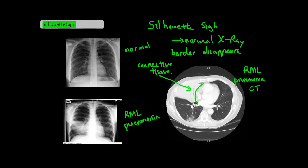Normally, the right heart border is next to the air in the lungs, which is why you can see a nice right heart border in healthy patients. But in patients with right middle lobe pneumonia, the right heart border no longer borders air but borders the pneumonia, which has the same density as the heart. As a result, the right heart border disappears, and because the density of the right heart and right middle lobe pneumonia are similar, this is the classic silhouette sign.